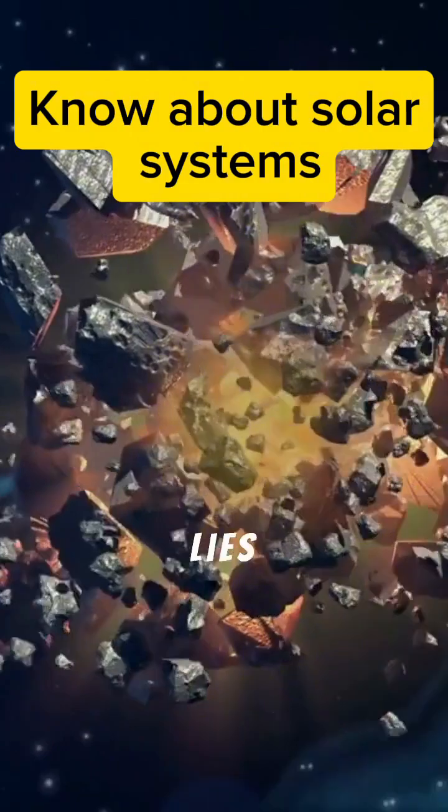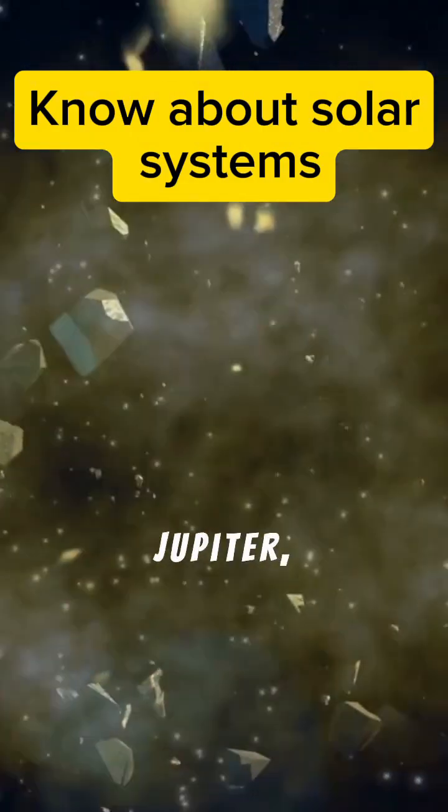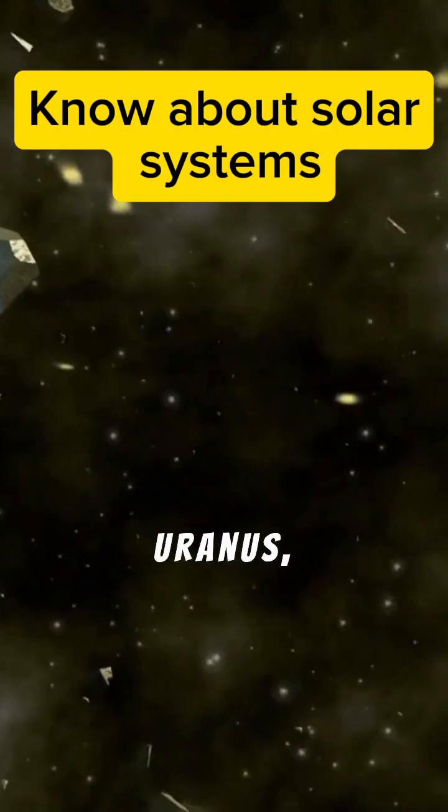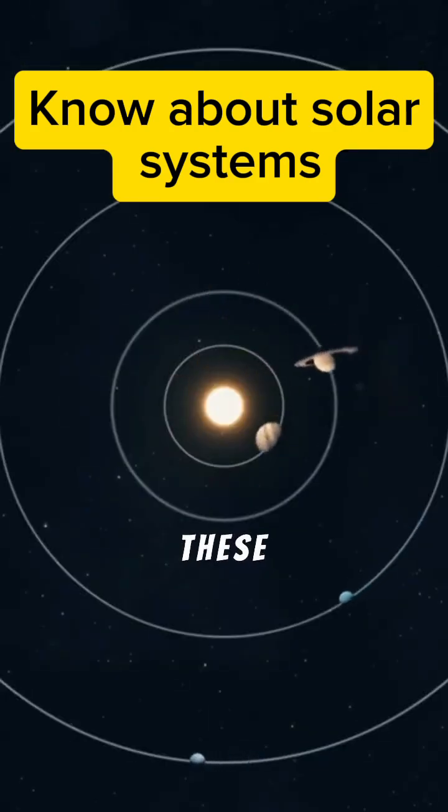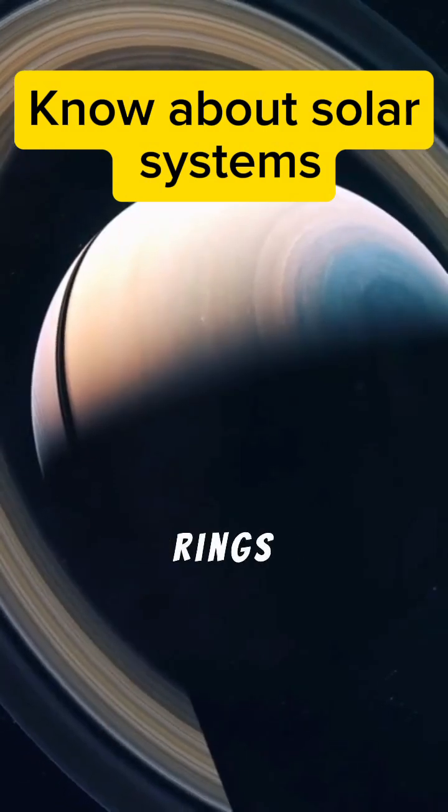Beyond Mars lies the asteroid belt and then the gas giants: Jupiter, Saturn, Uranus, and Neptune. These planets are much larger than the inner planets and are primarily made of gas. Saturn's rings are a spectacular sight.